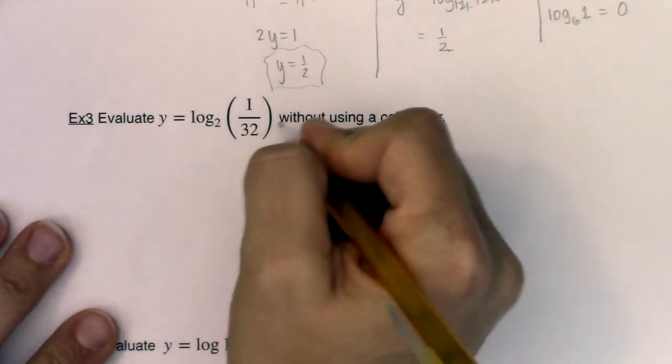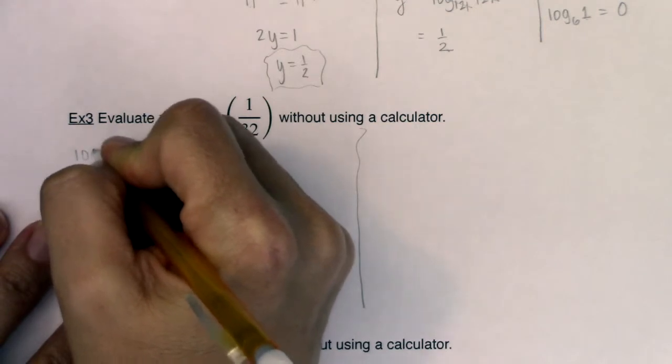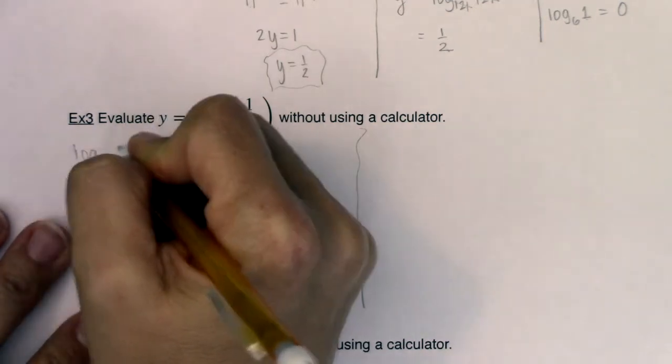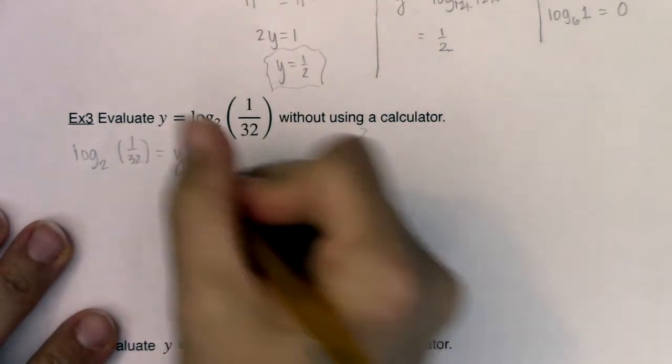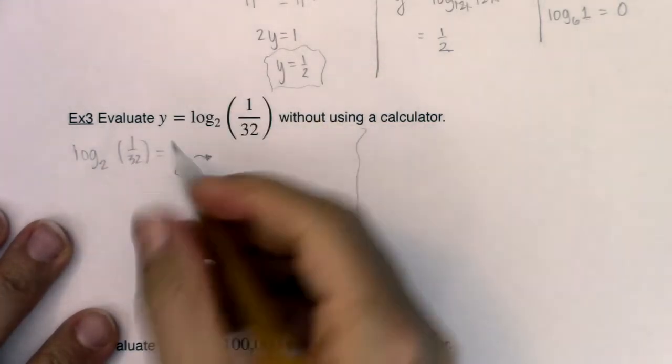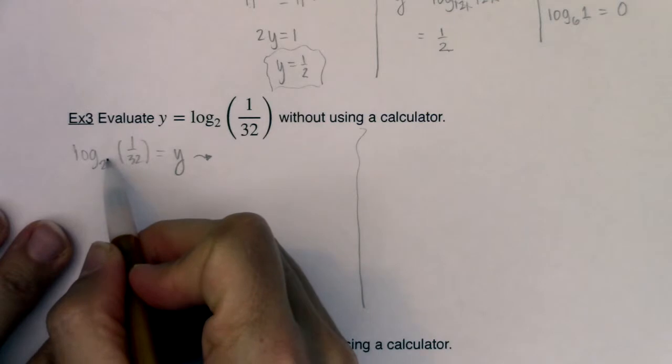So if I have y equaling log base 2 of 1 over 32, I could say log base 2 of my argument 1 over 32 is equal to y, and from there I can write this in equivalent exponential form.